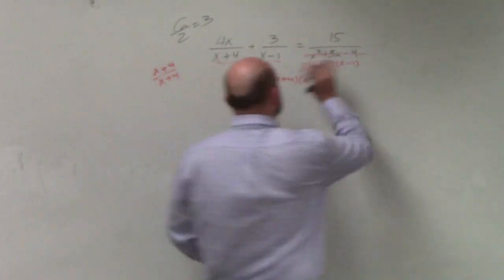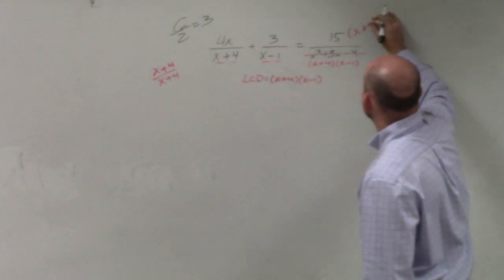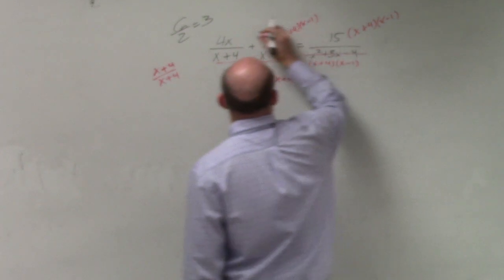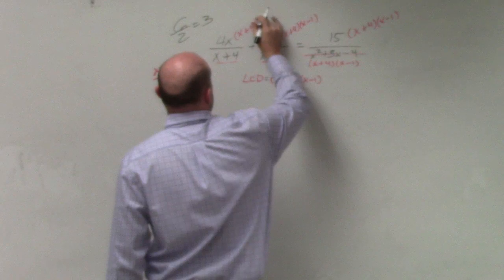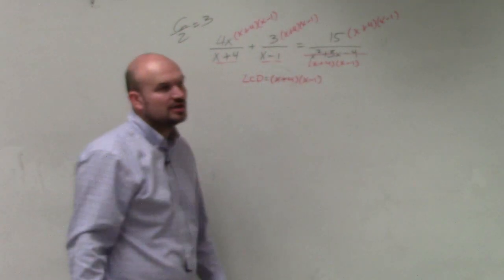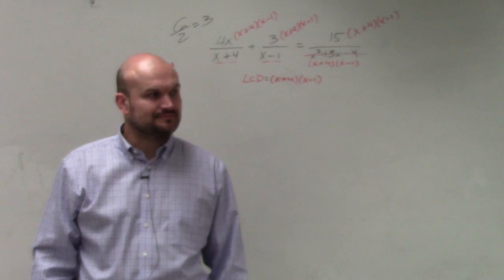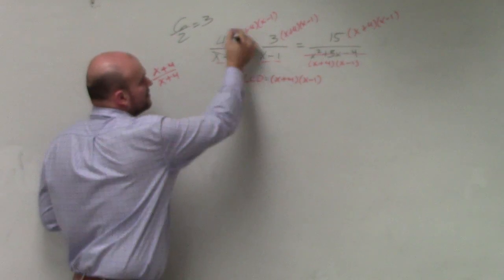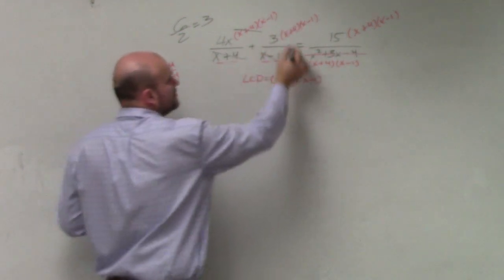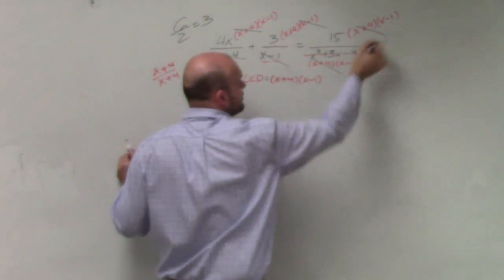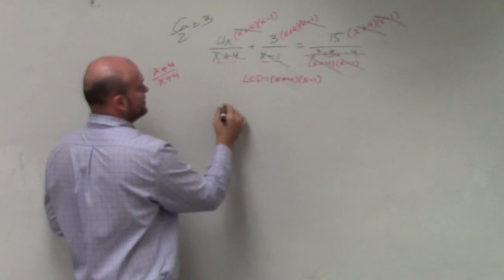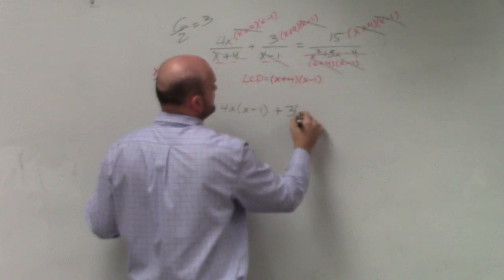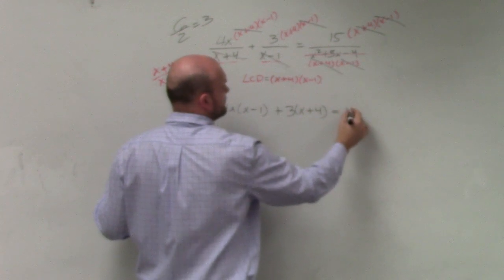So now, what we want to do is we take our LCD and we multiply every single term times our LCD. Every single term times our LCD. Okay? So now what happens is, does x plus 4 divide into this x plus 4? Does x minus 1 divide into that x minus 1? Does x plus 4? Yes. Yes. So now we're left with this equation.